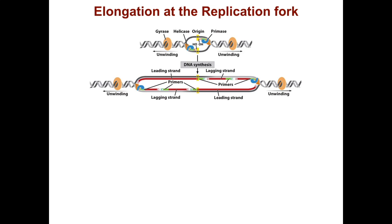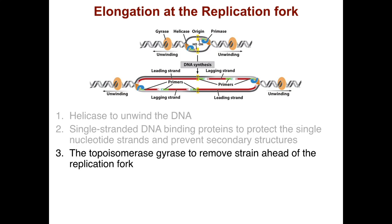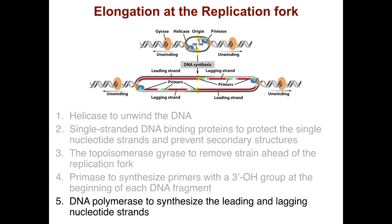Elongation at the replication fork requires: a helicase to unwind the DNA; single-stranded DNA binding proteins to protect the single nucleotide strands and prevent secondary structures; the topoisomerase gyrase to remove strain ahead of the replication fork; a primase to synthesize primers with a 3' hydroxyl group at the beginning of each DNA fragment; and DNA polymerase to synthesize the leading and lagging nucleotide strands.